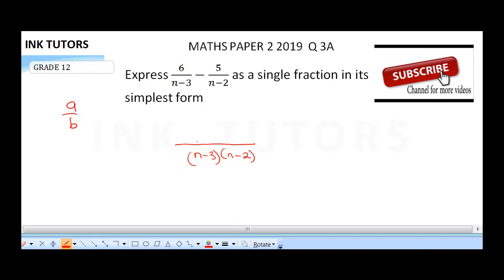When you divide by n minus 3, we get n minus 2. 6 times n minus 2 goes in the numerator. Then minus 5 times n minus 3. 5 times n gives us minus 5n. Minus 5 times minus 3 gives us plus 15.